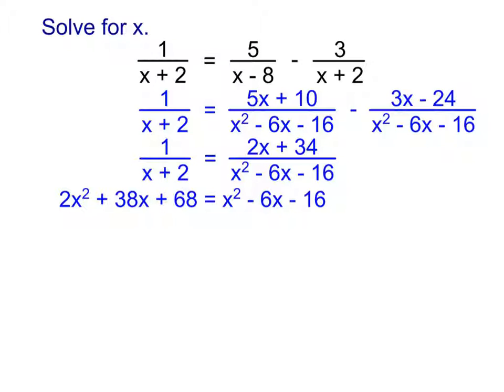You will go ahead and multiply the whole (x + 2) by the whole (2x + 34) — think of it as parentheses times parentheses, so make sure you're multiplying everything in the first by everything in the second. Then multiply the 1 by (x² - 6x - 16). When you do that multiplication, this is what you should be looking at. Then it's a matter of how we solve this — we have quadratics. If I want to solve a quadratic, I'm going to try setting the whole equation equal to 0, moving everything to the left side to keep my x² term positive, which makes factoring easier.